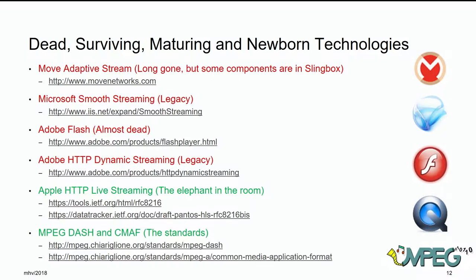This slide shows the technology history — red indicating legacy. It all started with Move Networks around 2006. Microsoft had Smooth Streaming, which is legacy now. Adobe Flash — almost gone, or maybe already gone. Adobe had another technology called HTTP Dynamic Streaming, which is already dead. HLS is the elephant in the room — there is an informational RFC 8216, and they are revising it now. The standards we have are DASH and CMF, and there will be further talks today about these things.